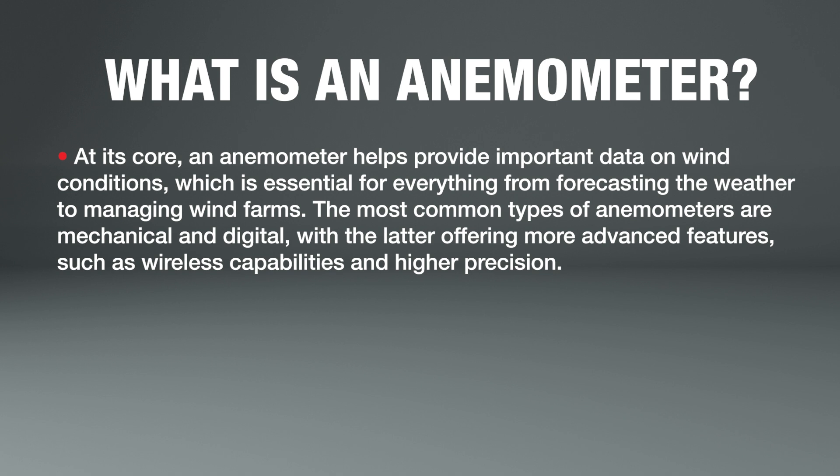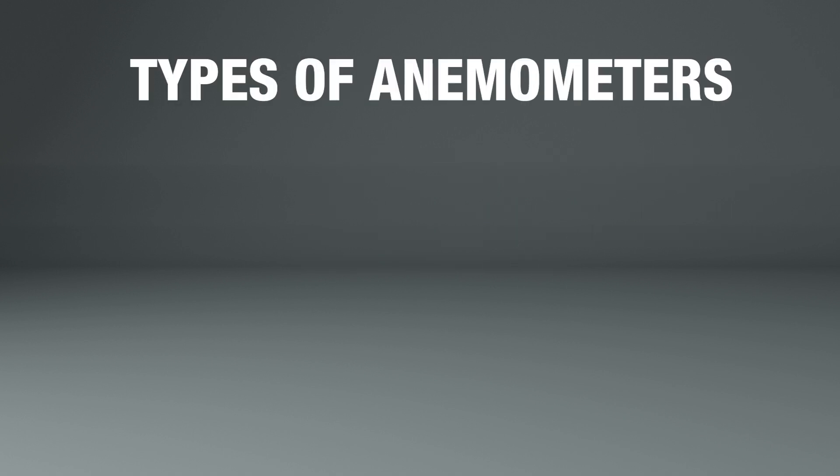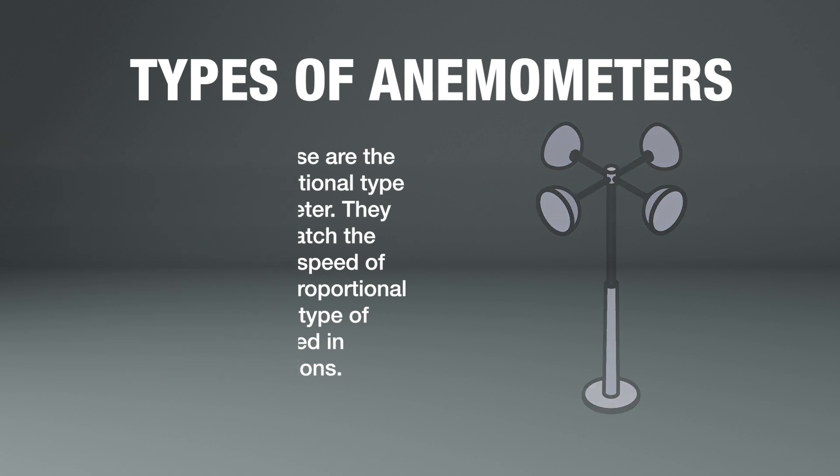The most common types of anemometers are mechanical and digital, with the latter offering more advanced features such as wireless capabilities and higher precision. Cup anemometers are the most common and traditional type of mechanical anemometer. They use a set of cups that catch the wind and spin, with the speed of rotation being directly proportional to the wind speed. This type is often used in meteorological applications.